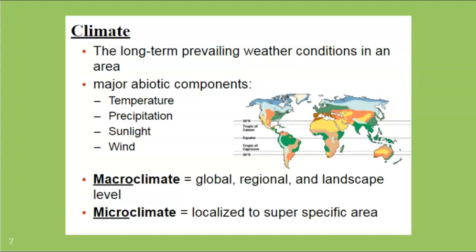One thing I want to be really specific about: climate is not weather. Weather is what's happening day to day. Climate is the general, long-term, prevailing weather pattern. For example, Wisconsin is typically thought of as a colder state, but that doesn't mean we can't get 100 degrees in the summer. Wisconsin and Mexico have different climates even if both can have a 100-degree day — that's just one day's weather. Climate takes into account temperature, rainfall, snowfall, sunlight, wind, and all of that.